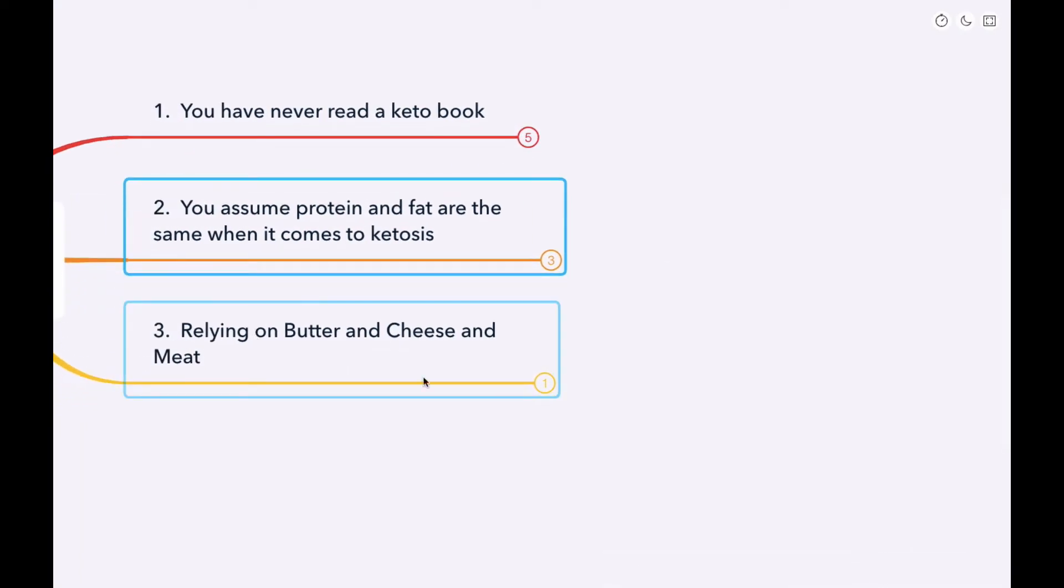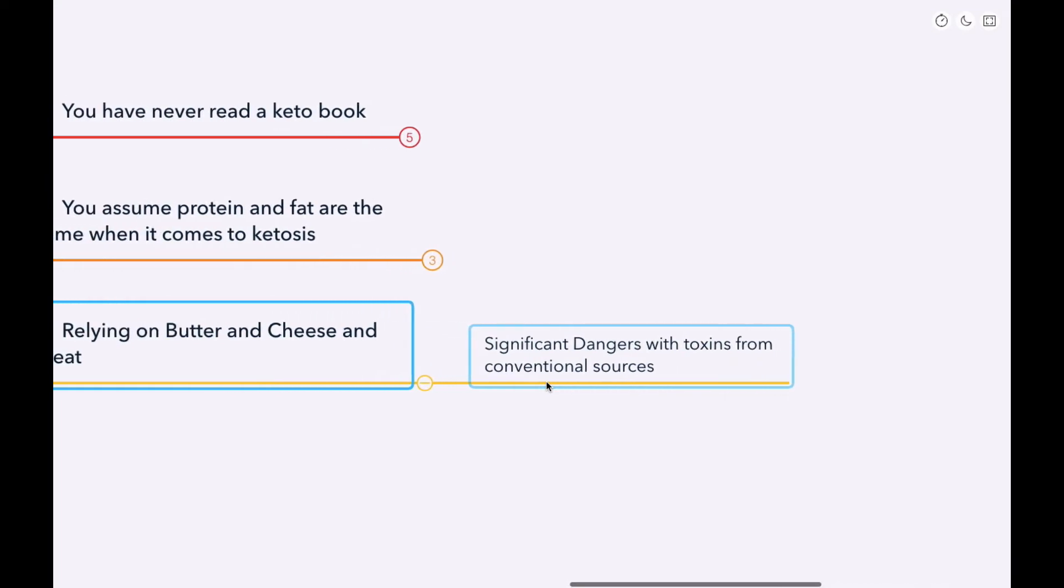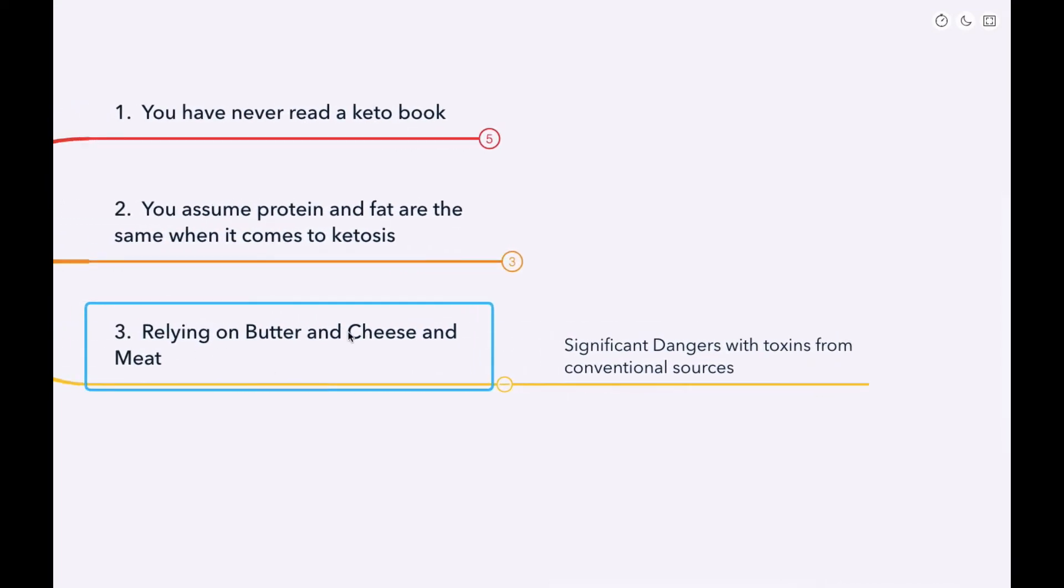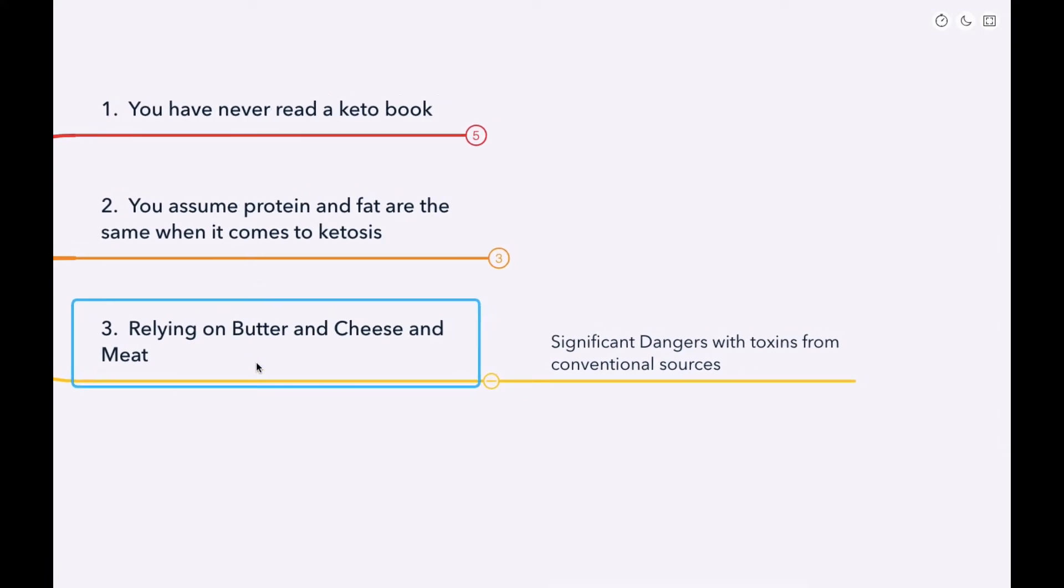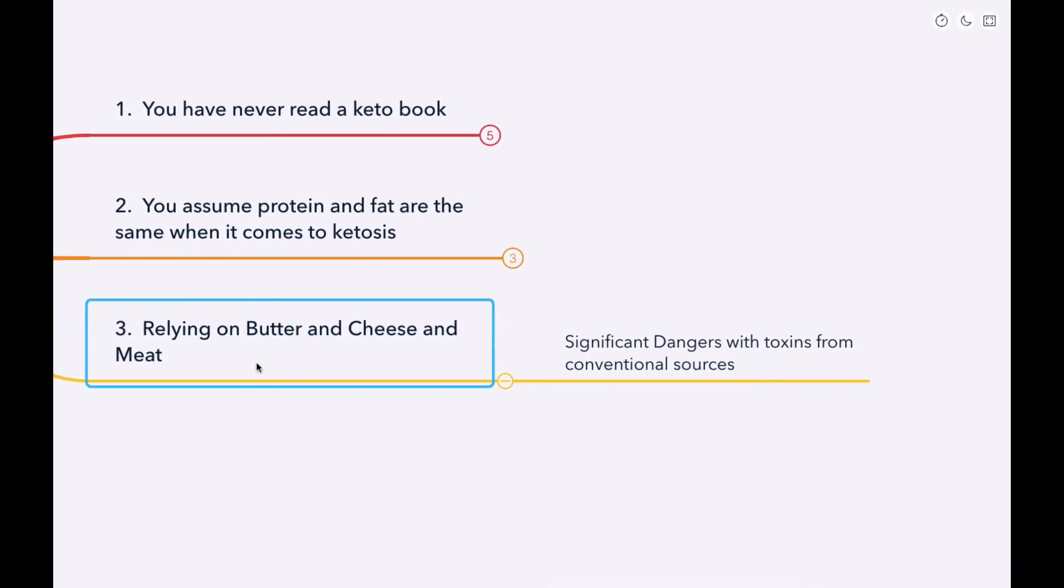Number three is relying on butter and cheese and meat. There's significant dangers to the toxins that come from conventional sources of butter, cheese and meat. I mean, basically your body, your body and all animals store toxins in fat. So when you have sudden amount of weight loss, fat loss, people can get sick because they're releasing toxins that have been stored in their fat. And when we test people's fat, there've been studies that test people's fat. I mean, the things that you see in there, like jet fuel as an example, just from breathing the fumes on a plane, you can take a fat sample from somebody's body and analyze the fat and you actually see, you can see things like literally jet fuel.